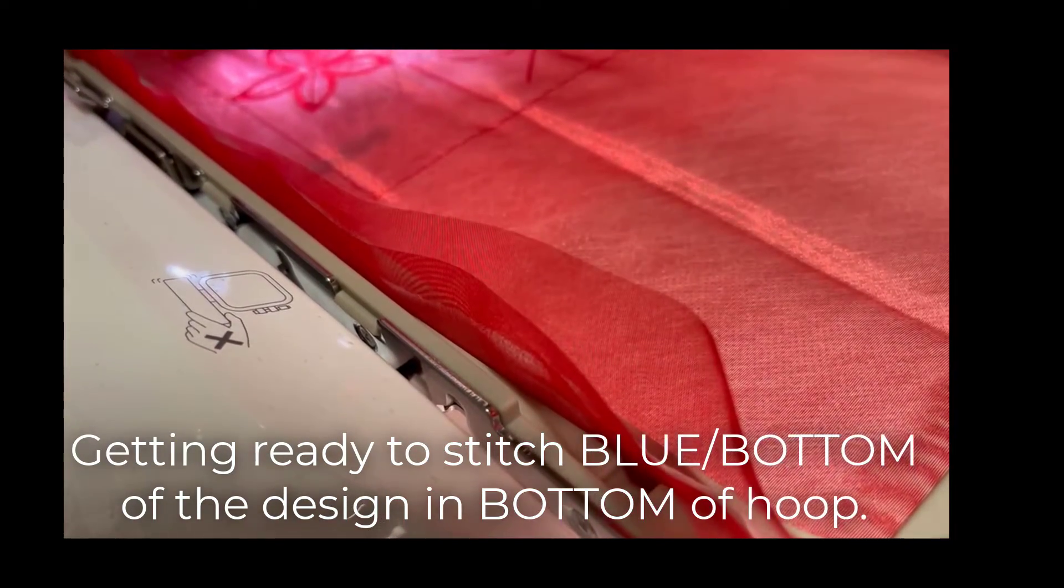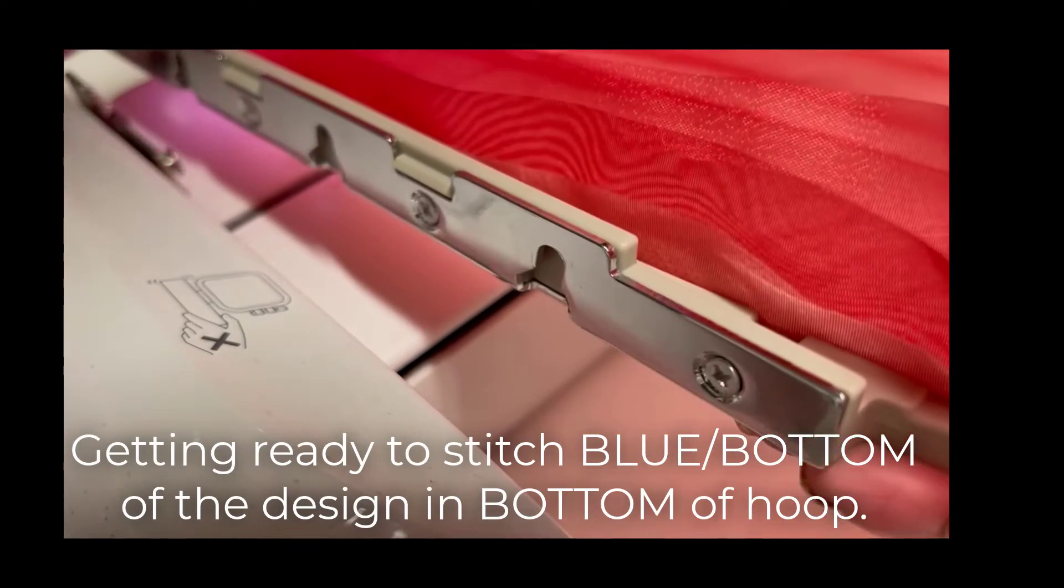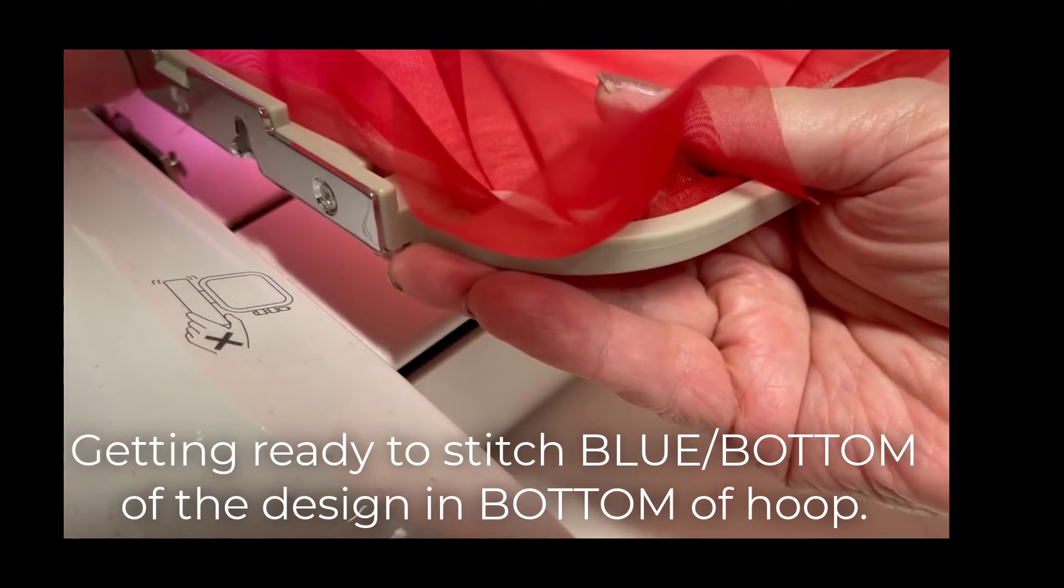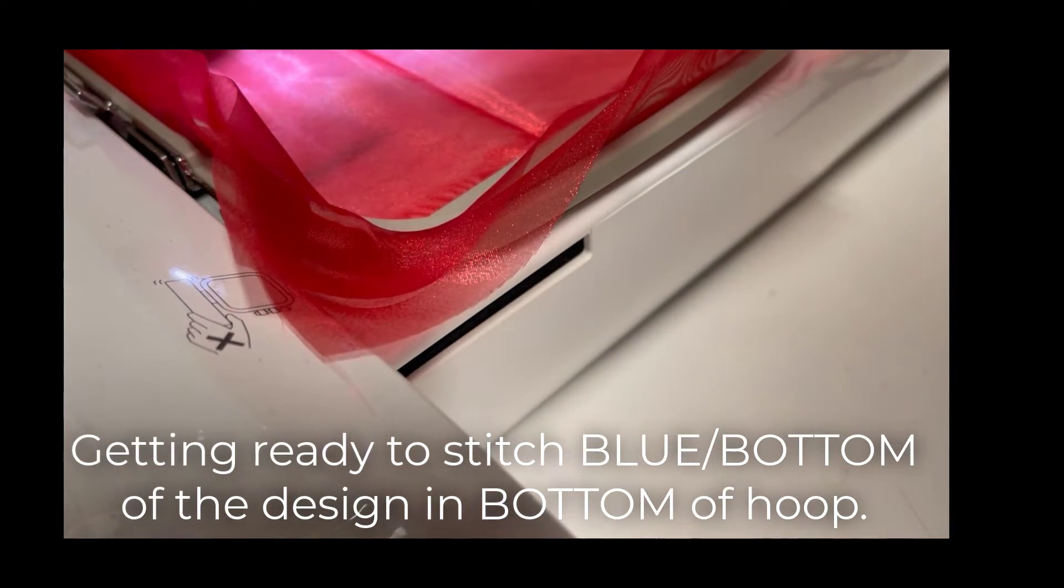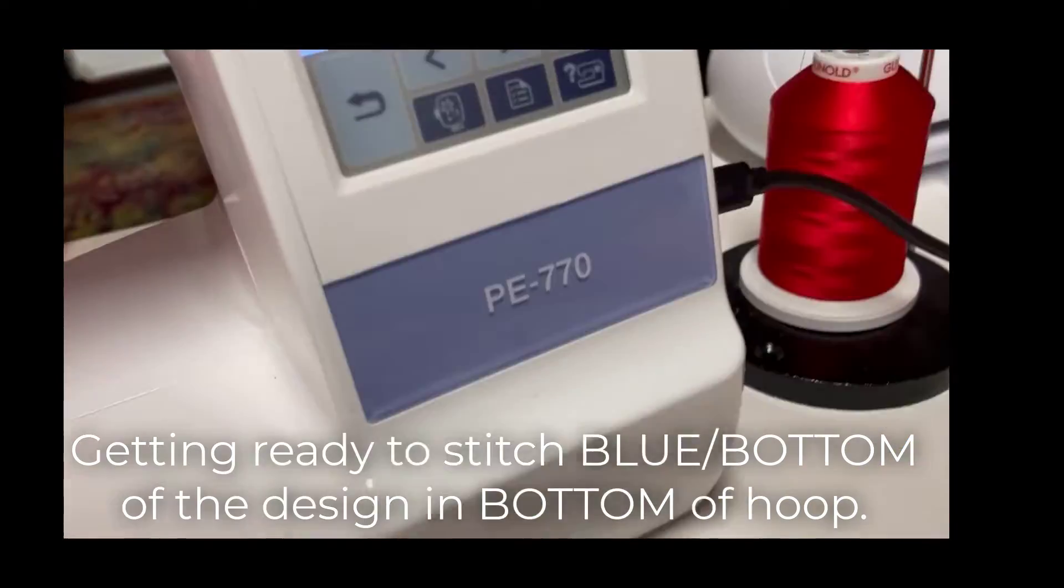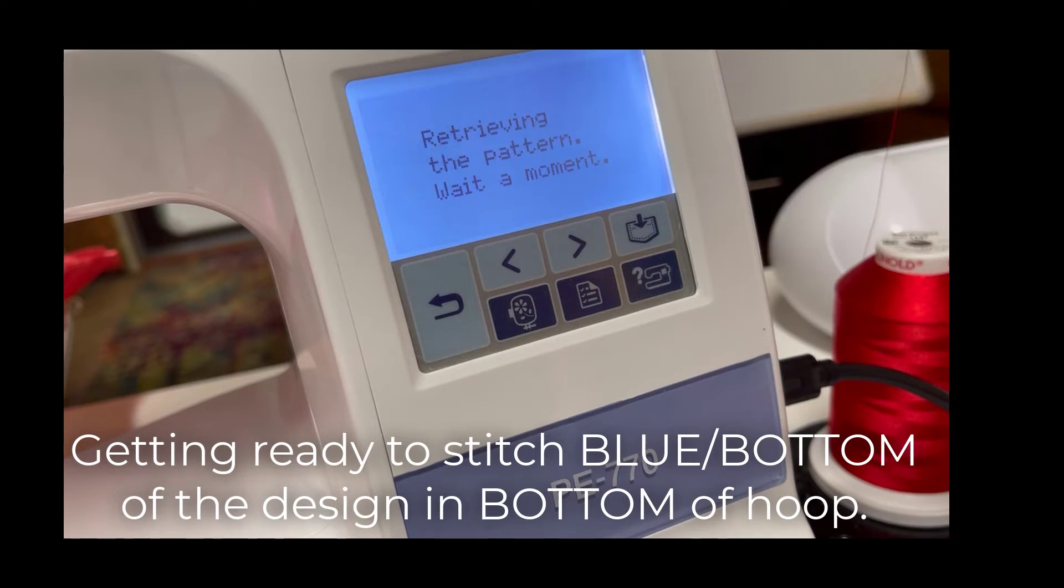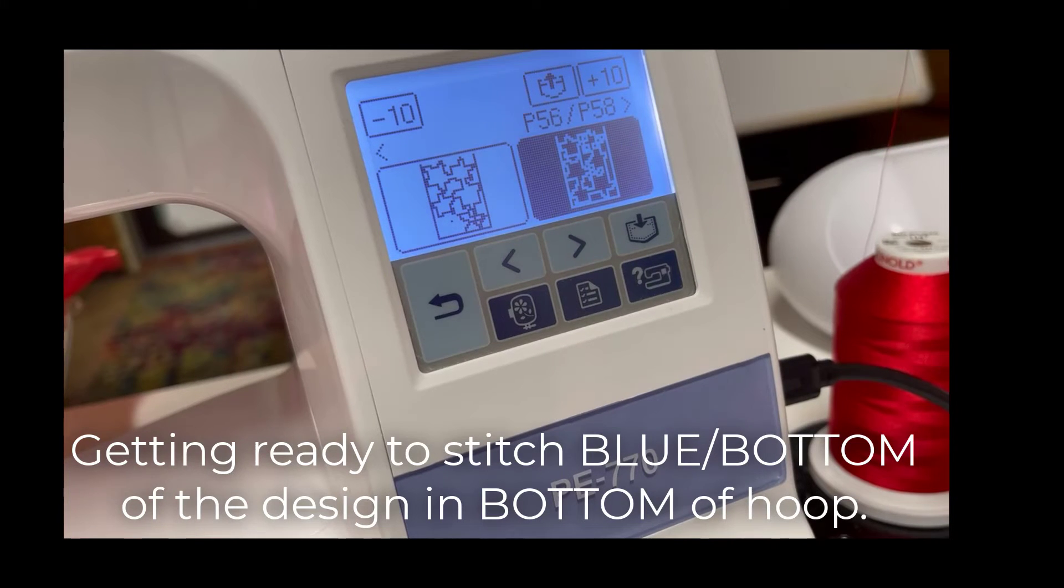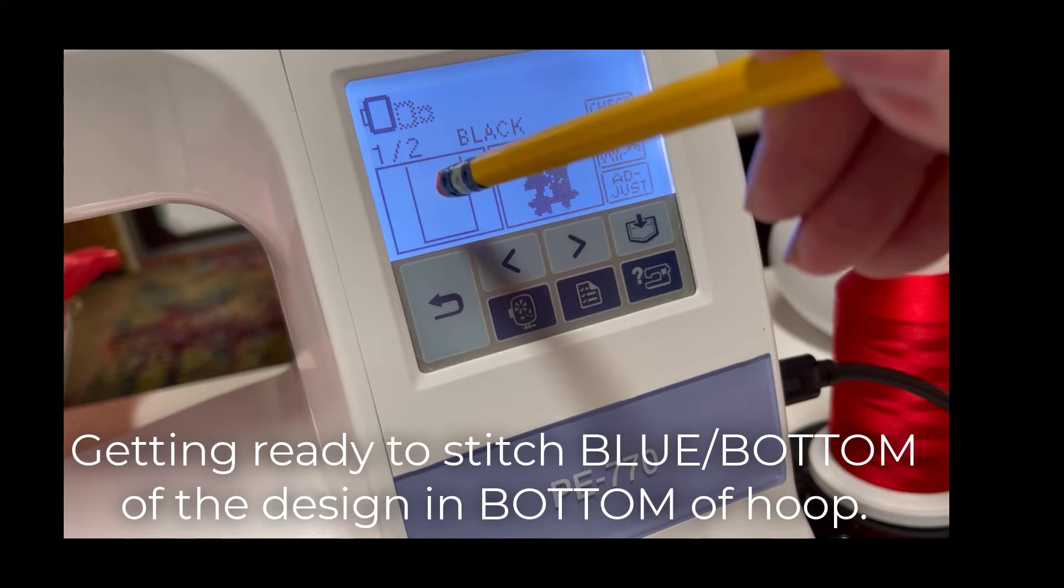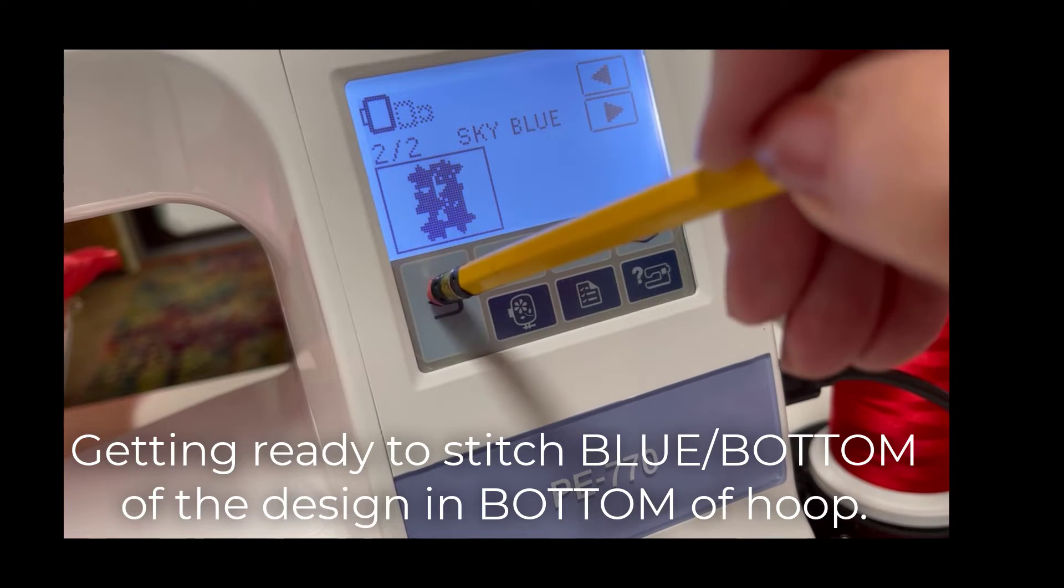At this point, I'm getting ready to stitch the bottom part of the design in the bottom part of the hoop. So I'm removing the hoop and now I'm going to put it in the lower two little slots. And if we look up here at the screen on my PE 770, you'll see that I've got to go now to the bottom design. So I'm going to say okay, delete this. And I'm going to go to the thumb drive again, and find my other design. And so it's this one, I'm pretty sure, but I'm going to double check. And the way I can double check again is I can check by looking at the color. The first one was black. And now I'm going to see the second one should be blue since it's the bottom and it is blue. So that's perfect.